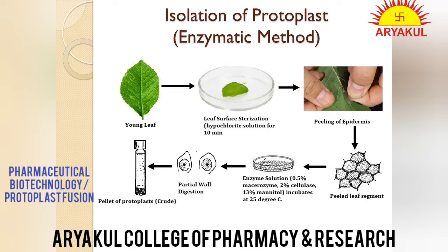So what exactly is this enzymatic method? Is diagram ko dhyan se dekho. Pehle leaf li hai. Pehle step mein surface sterilization kiya hai — the surface sterilization of the leaves is done by immersing them in hypochlorite solution for 10 minutes. After that, leaves are washed with double distilled water. Surface sterilization ke baad distilled water se wash karte hain. Uske baad the lower epidermis is peeled off — lower epidermis ko bahar nikal dete hain to facilitate the entry of the enzyme solution.